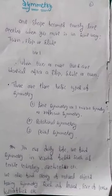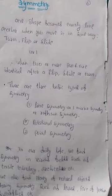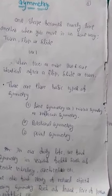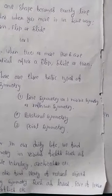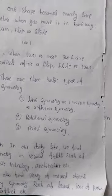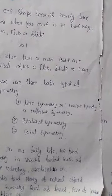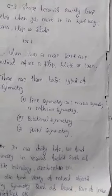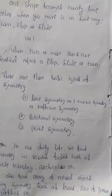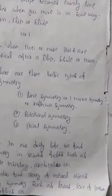There are three basic types of symmetry. First, line symmetry, also called mirror symmetry or reflection symmetry — these are all the same. Second is rotational symmetry, and third is point symmetry.